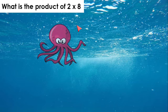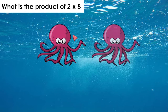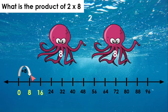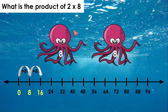2 times 8. We have 2 octopus with 8 legs each. How many legs do we have? We had 8 for 1 times 8. If we add another 8, we have 16 legs. So 2 times 8 equals 16.